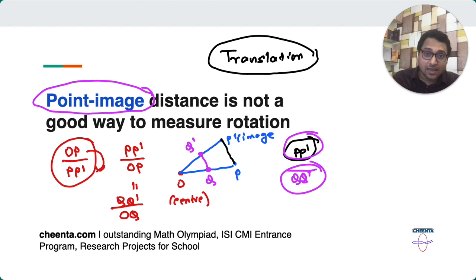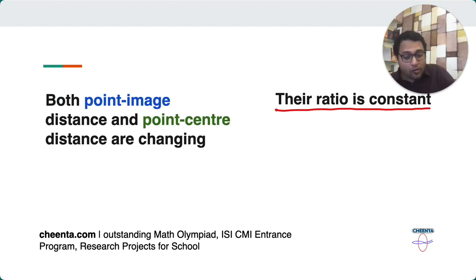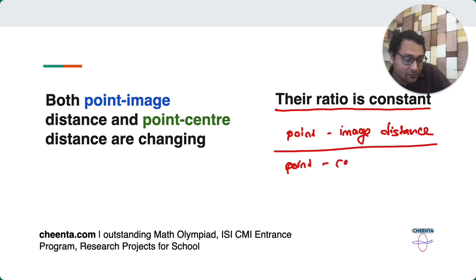And you can show this using similarity, similar triangles. So, can you give a comment in the description to show that these two triangles are actually similar and that these two ratios are equivalent? So though the point image distance is not constant, the ratio of point image distance and point center distance, these two are constant.